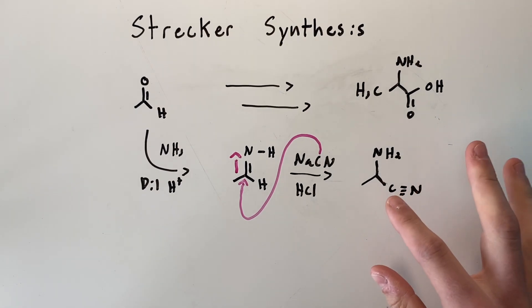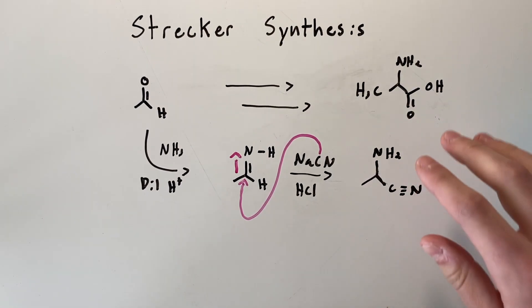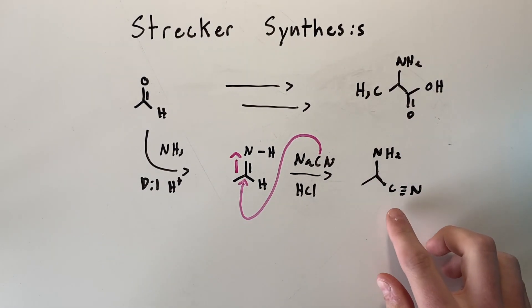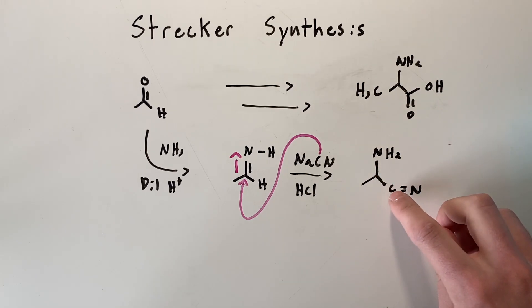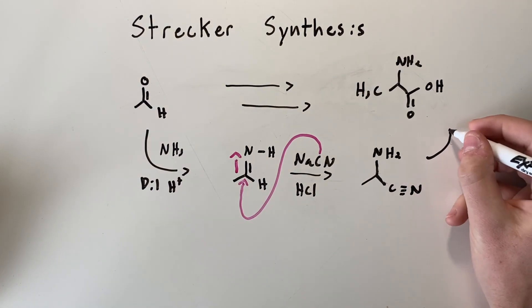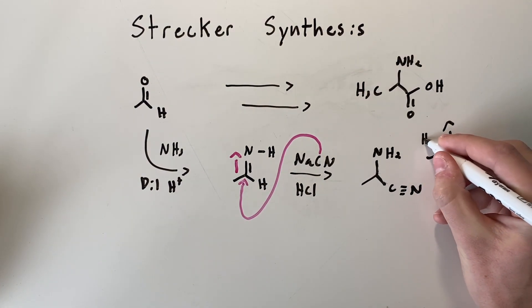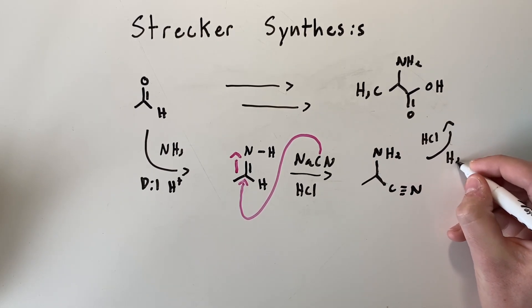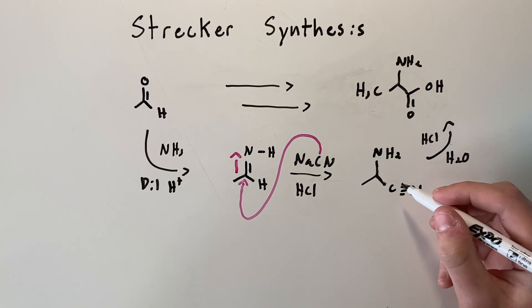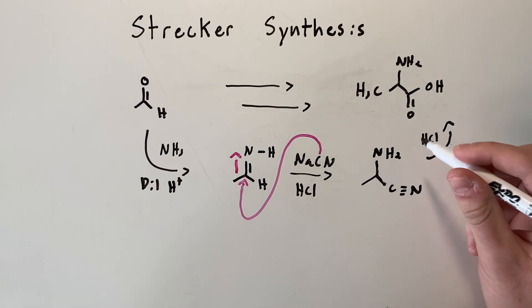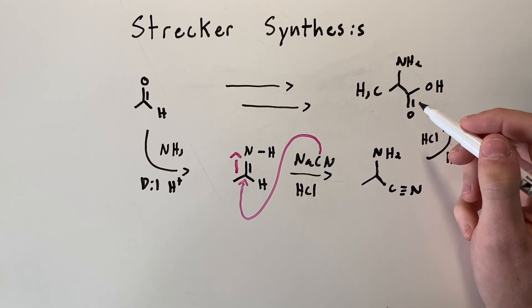So now we have this molecule. It's kind of looking like our alanine target molecule. The only difference is we have a nitrile group here and we want to have a carboxylic acid group where this carbon is. So what we're going to do is just add hydrochloric acid and water and we'll get our product. This is acid-catalyzed hydrolysis where the nitrile group turns into a carboxylic acid.